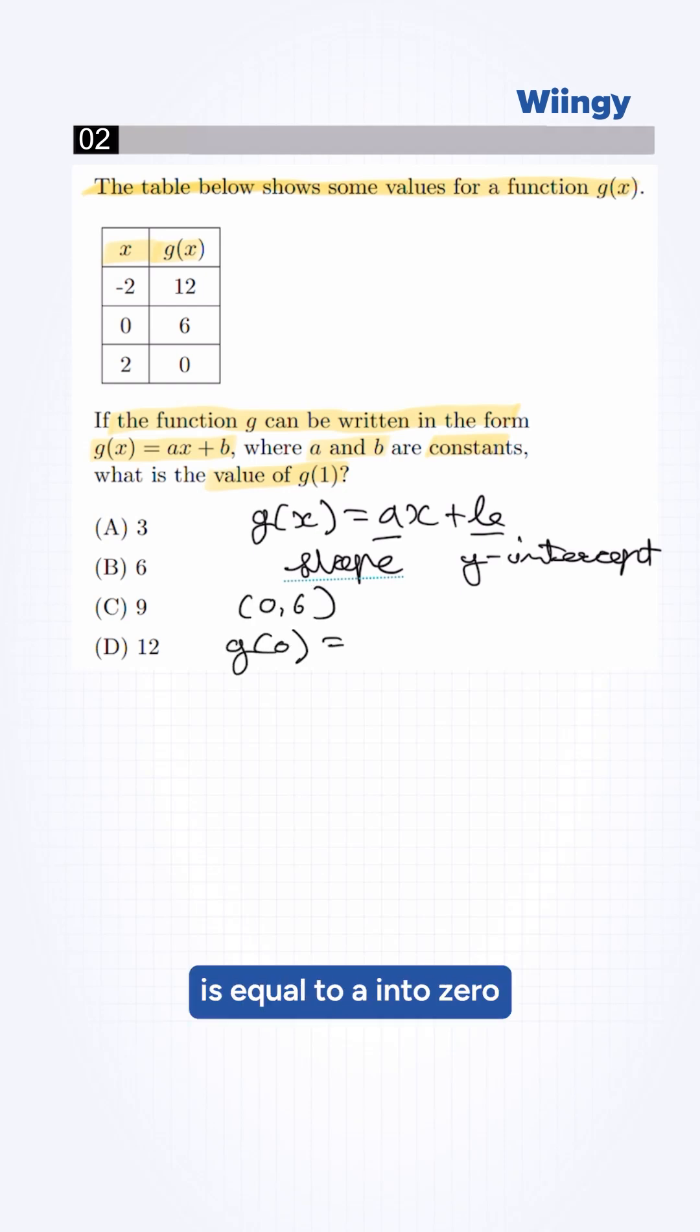It will be g of 0 is equal to a into 0 plus b. This will be 6 is equal to 0 plus b. Then b value will be 6.